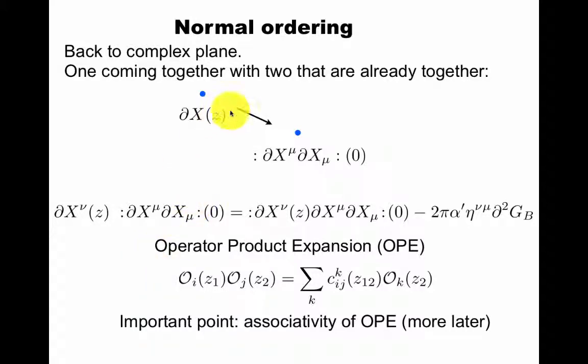Back to the complex plane. If you have one operator coming together with two that are already together, in the sense we said before, then you have to do this additional step that you normally order this with this and this with that. So you have to subtract two of these terms. Now you have this whole thing normally ordered. And this general concept is called the operator product expansion, which is much more general than the simple thing I've said here. But just to give a concrete idea, because to many people this is very abstract when you first see it. If I have an operator at point z1 and some other z2, I can expand them in a sum, possibly infinite, of a single operator at z2 with some coefficients that depend on the distance between 1 and 2. An important point is whether this is associative, and there's more about this later.